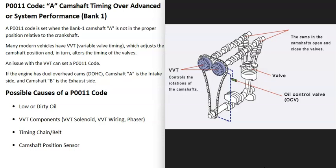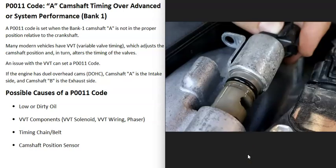The next possible cause is some kind of issue with the variable valve timing components. Many vehicles nowadays have a variable valve timing system — sometimes named differently, but the system is very similar. It's a very good system that can help the vehicle get better power at different RPMs, improve gas mileage, and adjust timing while the engine's running. If there's an issue with it, that can cause problems, including with the variable valve timing solenoid on bank one camshaft A, or the wiring going to the variable valve timing.